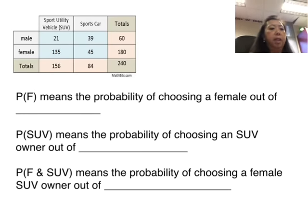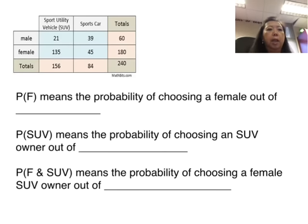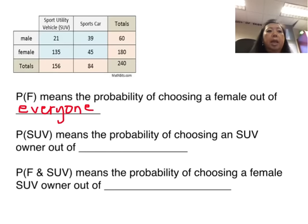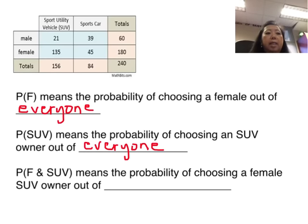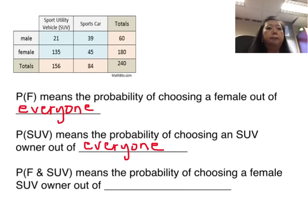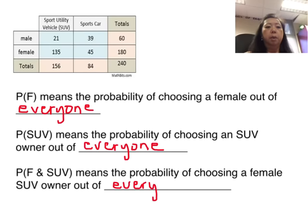P of F is just standard probability — it means the probability of choosing a female out of everyone, and everyone is the grand total of 240. P of SUV means the probability of choosing an SUV owner out of everyone, again 240 people. P of F and SUV means the probability of choosing a female SUV owner out of everyone, 240 people again. This is nothing new; this is just standard probability.